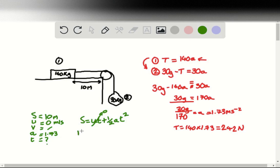So substituting in, we have 10 is equal to half times the acceleration, which is half multiplied by 1.73 multiplied by t squared. And we can rearrange this to be 20 over 1.73, and this is equal to t squared.